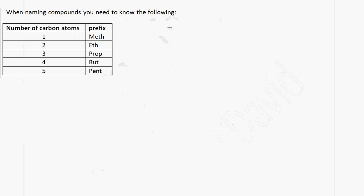When naming organic compounds, you need to remember this. If an organic compound contains one carbon atom, the prefix is going to be meth. If we have two carbon atoms, it will be eth. If we have three carbon atoms, it will be prop. If we have four carbon atoms, it will be but. And if we have five carbon atoms, it will be pent.